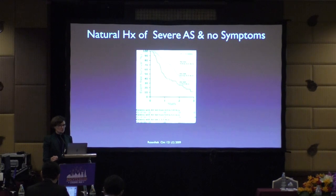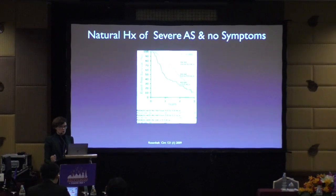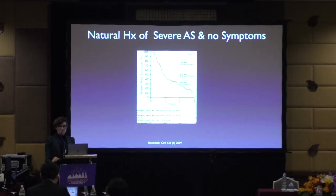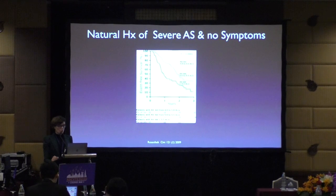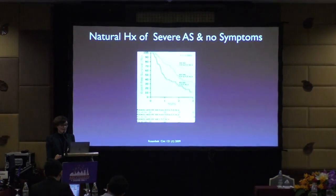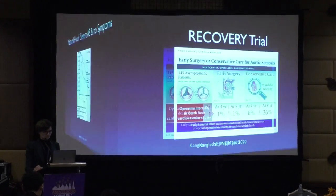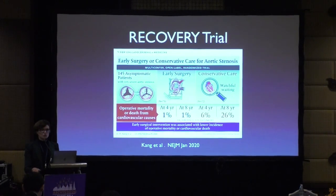The guidelines for surgery in severe AS state: symptomatic severe AS has dismal outcomes and patients should go to surgery. For asymptomatic patients: EF less than 50% warrants surgery; abnormal stress test with blood pressure drop warrants surgery; very severe AS with velocity greater than 5 m/s with low risk should be considered; and moderate or severe AS requiring cardiac surgery for other reasons should be considered. These guidelines stem from studies including Rosenheck's, showing patients with gradients ≥5 m/s did poorly.